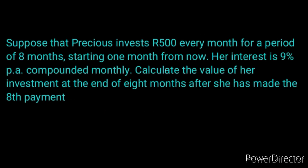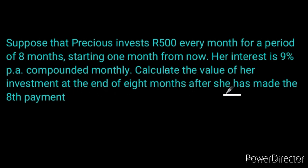Here is another scenario. Suppose that Precious invests 500 every month for a period of eight months starting one month from now. Her interest is 9% per annum compounded monthly. Calculate the value of her investment at the end of eight months after she has made the eighth payment. Notice she is investing 500 every month — it is not money left once off to grow, but money consistently being deposited into an account while it is growing. This is when we know we have to use either the future value or the present value formula.